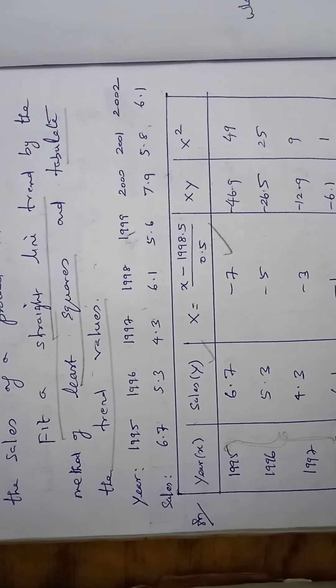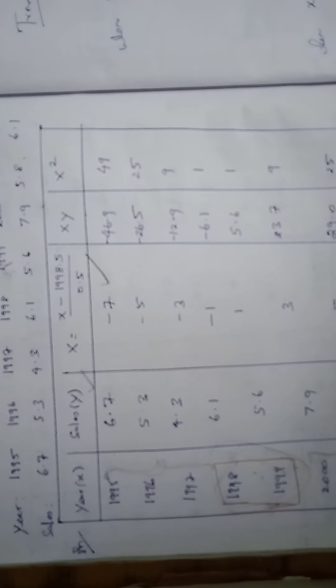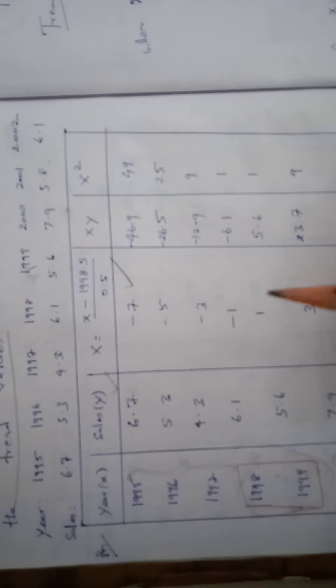So the first column is taken in year. Second column is taken in sales. And the sales can be taken in Y. And the third column is the computation of X. This X can be taken as small x minus 1998.5 by 0.5. So this is the formula.